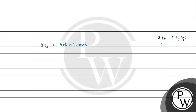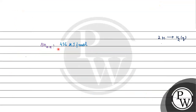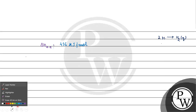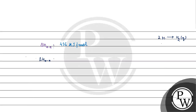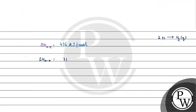किसी भी टाइप के एक mole bonds को तोड़ने के लिए जो energy हमें देनी पड़ती है, वो हमारे पास bond energy हो जाती है। यहाँ standard enthalpy of formation निकली है, इसका negative sign है। Bond energy के लिए positive sign होता है क्योंकि reaction endothermic होती है। तो ΔH of N-N bond होगा 712 kJ per mole।